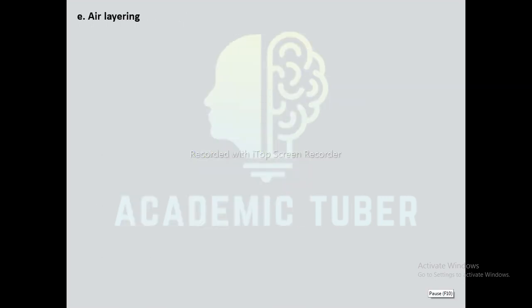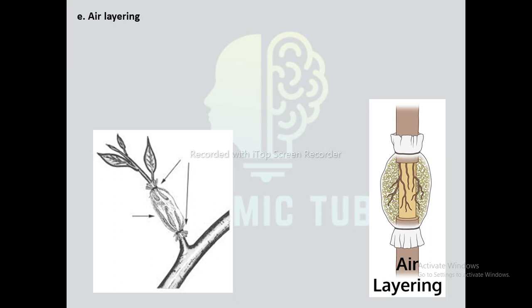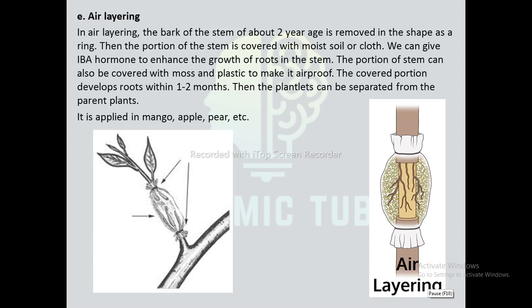Next is air layering. Air layering is a type of artificial vegetative propagation in which the branch of a tree is cut and buried into the soil to grow a new plant. It is the most popular method of artificial vegetative propagation. In air layering, the bark of the stem of about 2 years of age is removed in the shape of a ring. Then the portion of the stem is covered with moist soil or cloth. IBA hormone can be given to enhance the growth of roots. The covered portion can also be wrapped with moss and plastic to make it airtight. The covered portion develops roots within 1 to 2 months, after which the branch is removed from the tree and sown in the ground for further germination. It is applied in mango, apple, pear, etc.